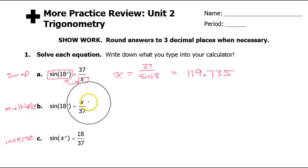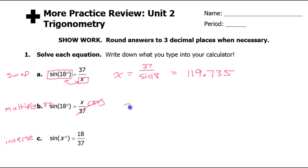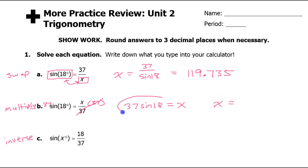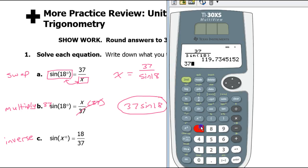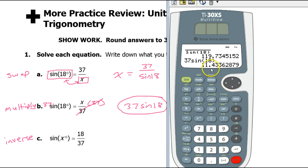Now when I say multiply, I'm talking about multiplying by the denominator. So here, I would multiply both sides by 37. So that would mean that 37 sine 18 is equal to x. So this is what gets put in the calculator — 37 sine 18 — so that is 11.434, got to round up.